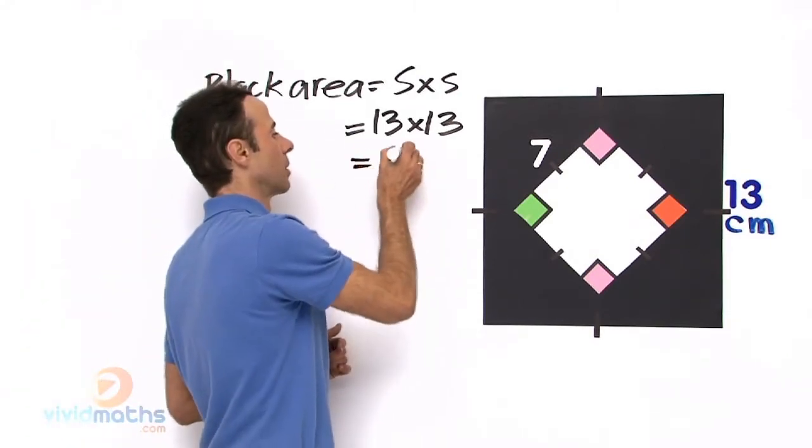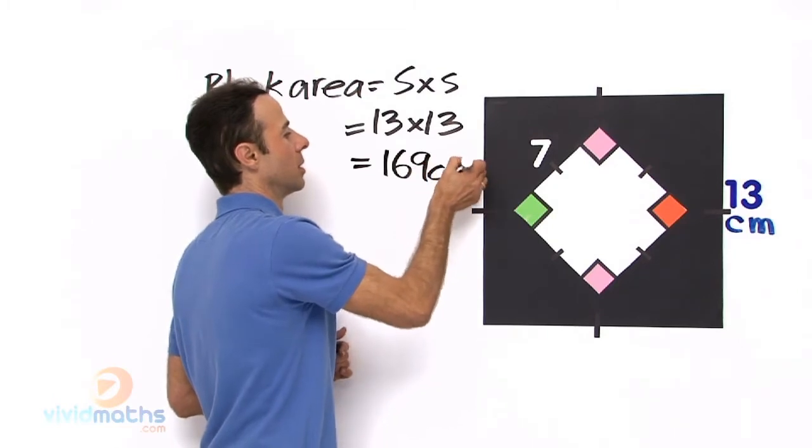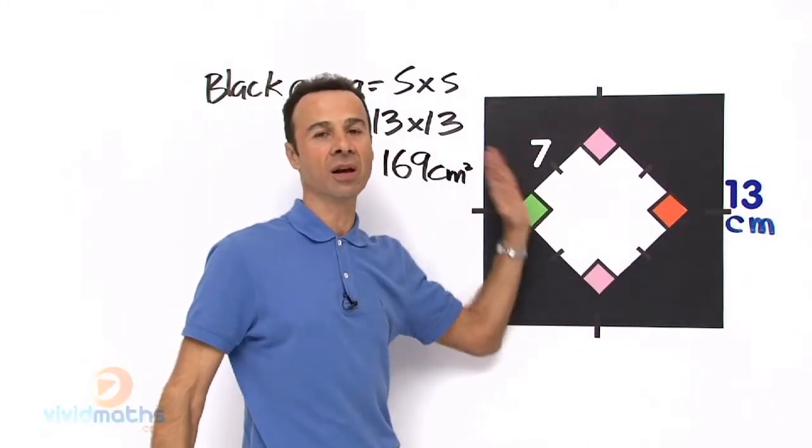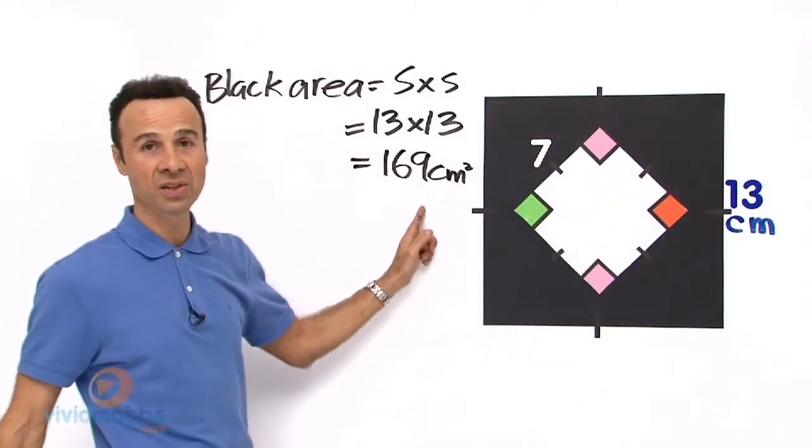That is the total of the black area including the area in here, so everything within this square is 169cm squared.